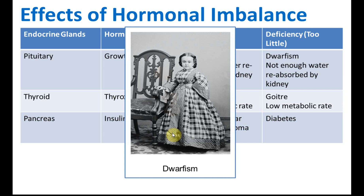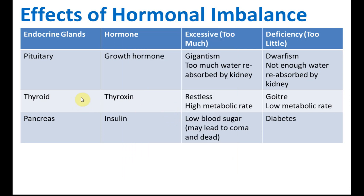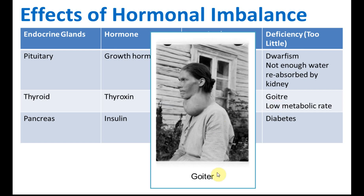Here is an example of dwarfism - this is an adult but the body is very small. For the thyroid gland, it produces thyroxine. If we have too much thyroxine, it causes restlessness and high metabolic rate - the body is full of energy and very active even when tired. Deficiency of thyroxine will cause goiter and low metabolic rate. Here is an example of goiter, where the neck swells.